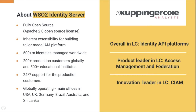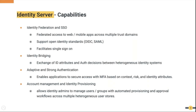We have a 24-7 support model and offices globally — in the US, UK, Germany, Brazil, Australia, and Sri Lanka. Those are the main offices, but we have a large partner network and we work globally. On the right-hand side you can see several analyst recognitions. In 2019 we were identified as overall leader in identity API platforms in KuppingerCole analyst reports, and we were named as a product leader in access management and federation, and also an innovation leader in CIAM solutions.